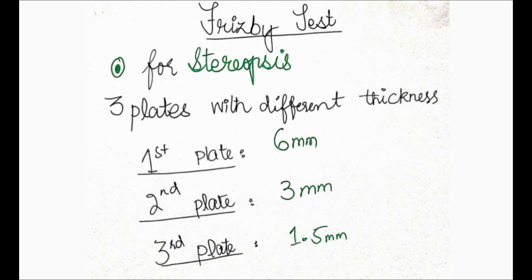In the Frisbee test, we have basically three plates, and all three have different thicknesses — they vary in thickness. The first plate shown to the patient is 6 mm, the second plate is 3 mm, and the third plate is 1.5 mm.